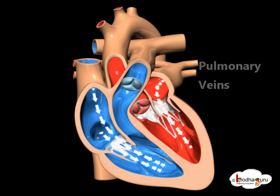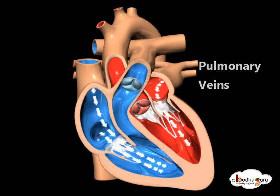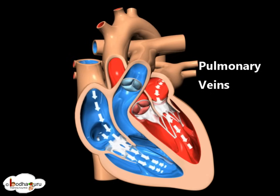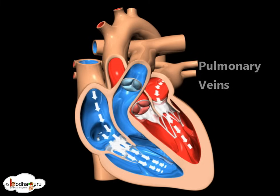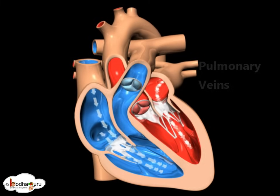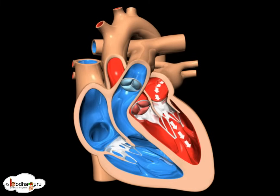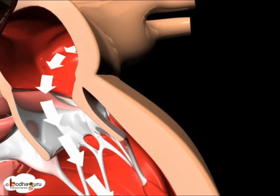The pulmonary veins carry oxygenated blood to the left atrium. Blood flows from the left atrium into the left ventricle through the open mitral valve.